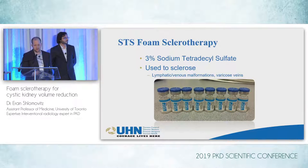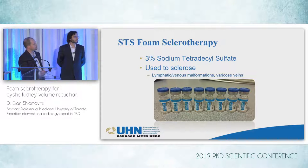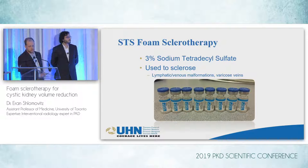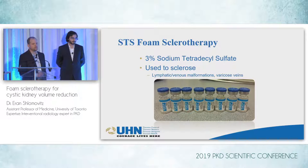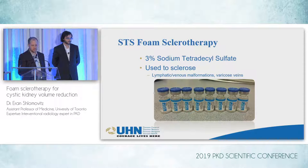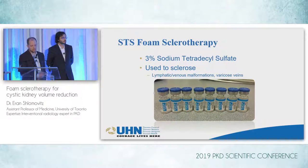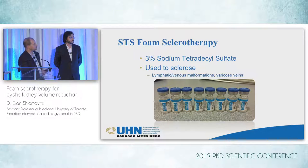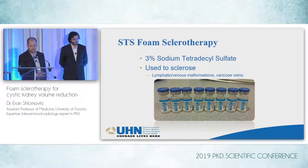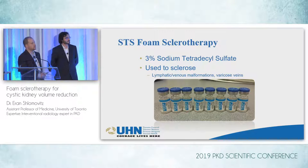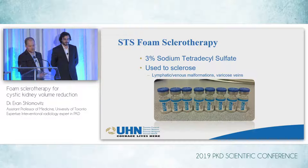Various agents have been reported in the literature for sclerotherapy procedures. Alcohol is a common agent, but we've moved away from it mainly because it's quite painful for patients. STS — sodium tetradecyl sulfate — is much better tolerated. It's essentially a detergent used commonly for treating lymphatic and venous malformations. This is an off-label use for STS, but we've been using it for quite a while and it appears to have a very good safety profile.